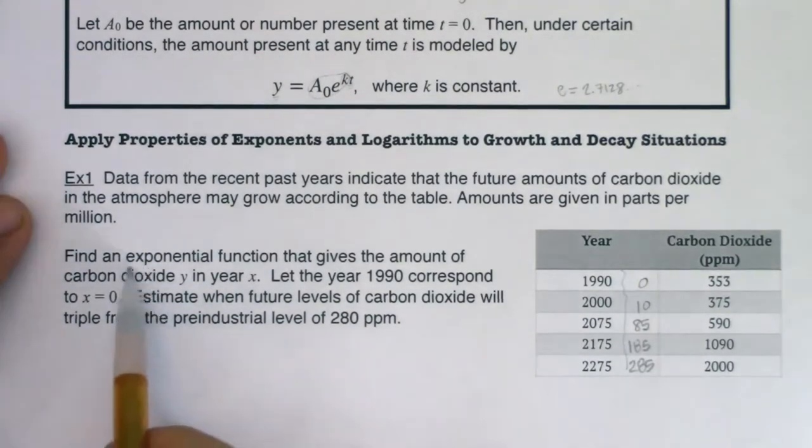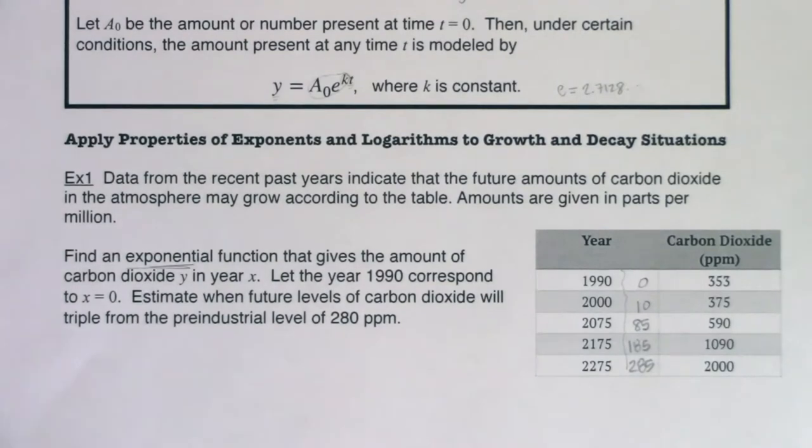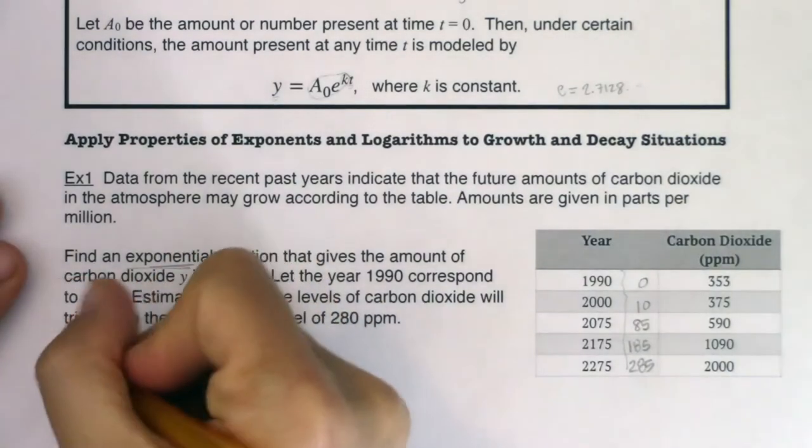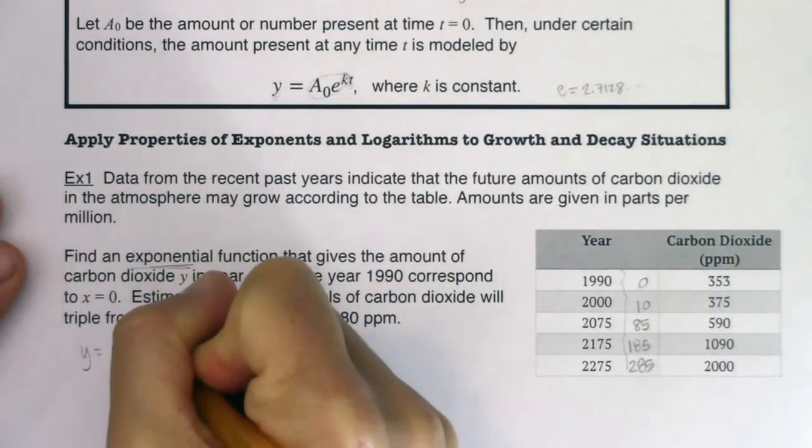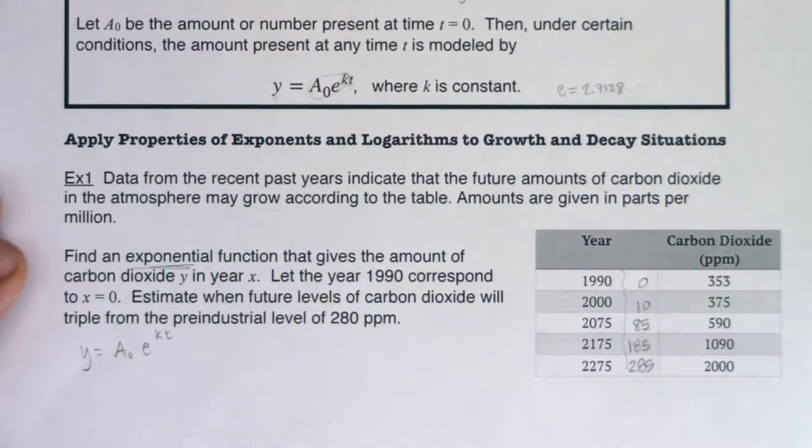It says find an exponential function. It specifically says exponential function. So I know that if I want an exponential function, I'm going to be looking at A₀e^(kt). This is just a different version of Pe^(rt). When we were doing those financial questions, we had Pe^(rt). Instead of P, we're calling it A₀. Instead of r, we're calling it k. But it is the same function. This is always the case for exponential growth or decay.